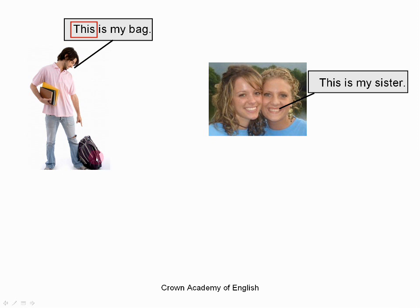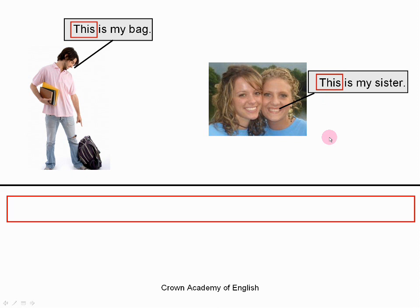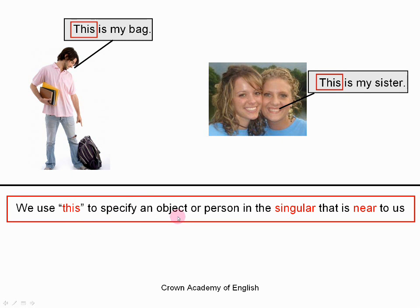For example, the bag is very close to the man and there is only one bag. So we use the word 'this'. And it is the same here — the girl on the right, her sister is very close to her, she is next to her, and there is only one sister. So 'this' is in the singular. The rule: we use 'this' to specify or to show an object or person in the singular that is near to us.